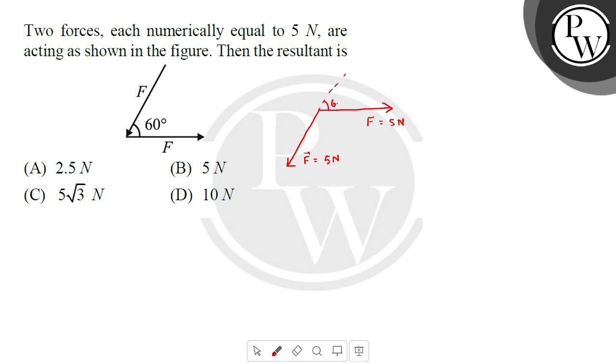This angle was 60 degrees. Now how much is this angle? 120 degrees, because one line's full angle is 180. Now we have to find the resultant, so we have to use the vector resultant formula.